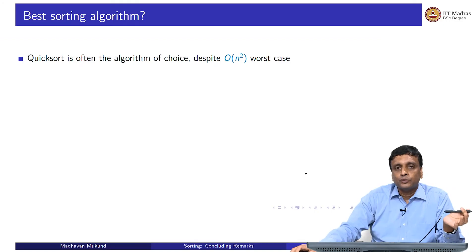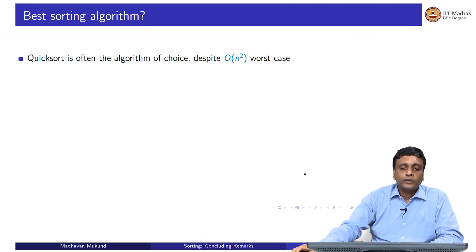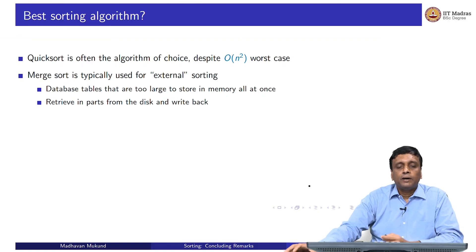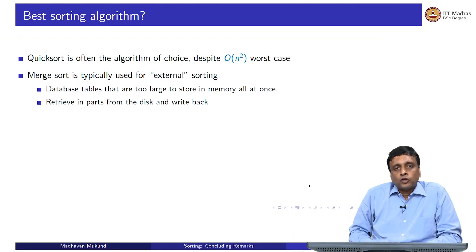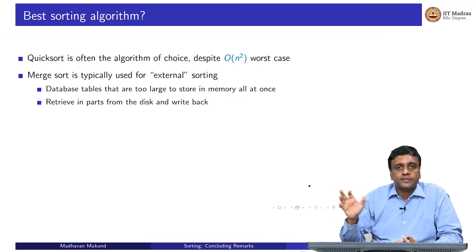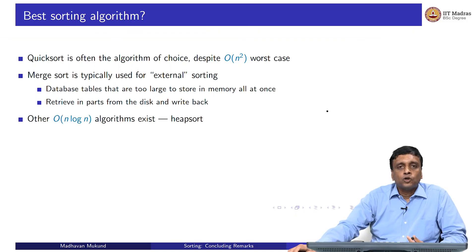Is there a best sorting algorithm? As you can see from our discussion, there is no single best sorting algorithm overall. Quicksort is very often the algorithm of choice — when using built-in functions, people use quicksort despite its worst case. But there are situations, like sorting in a database, where you need to put parts of the data into memory and part out — this is called external sorting, and merge sort is typically used for that. Merge sort is not the only O(n log n) algorithm; there is also heap sort, which also runs in n log n, and other n log n algorithms exist.